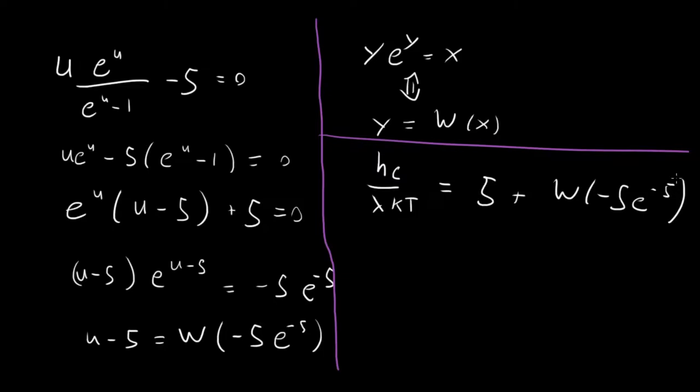What's our last thing to do? From the get go, we were trying to solve for lambda. We wanted to find the value of lambda for which this was satisfied. So now we just need to solve for lambda and that's straightforward. We get lambda equaling hc over kt multiplied by this funny factor, this five plus W of minus five e to the minus five.